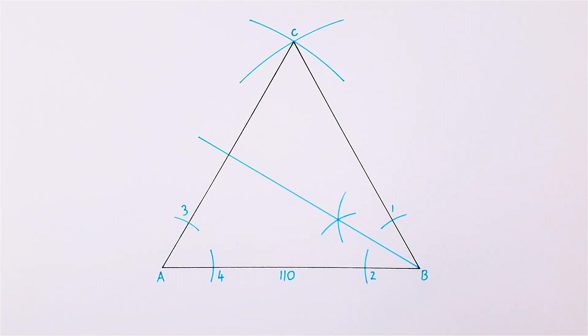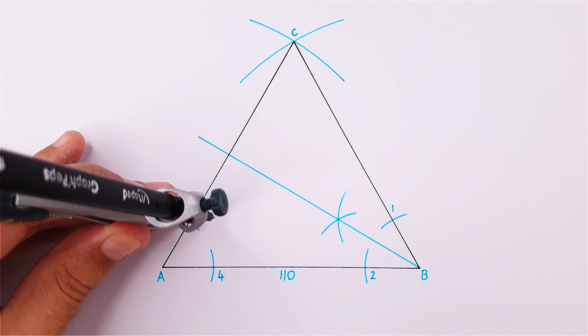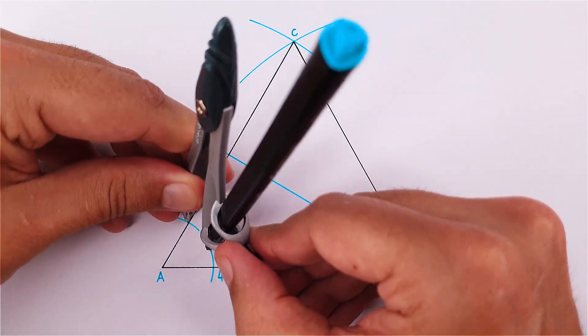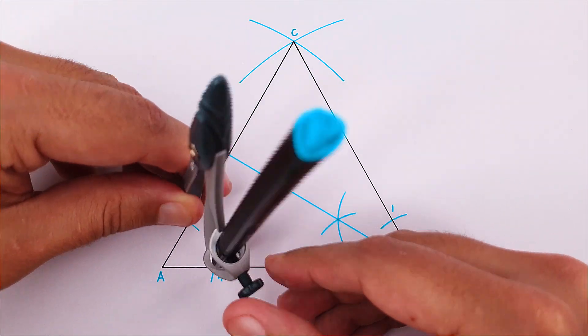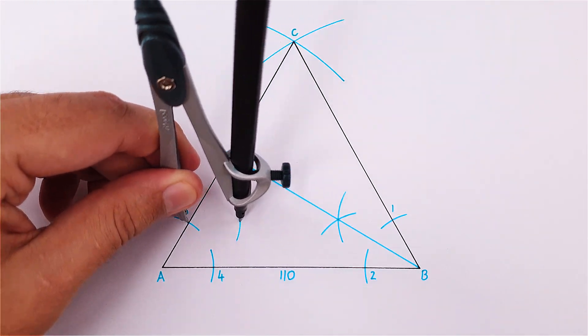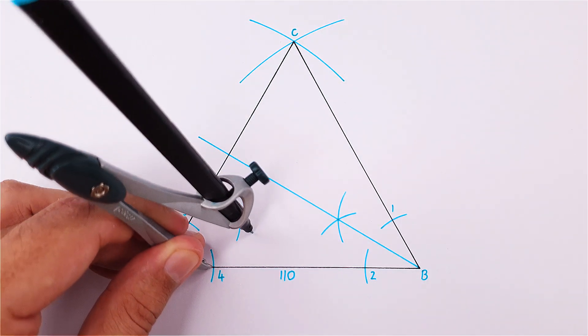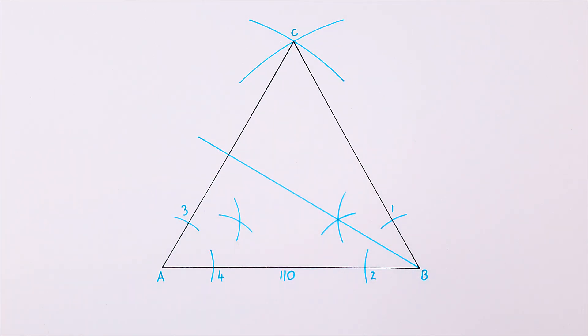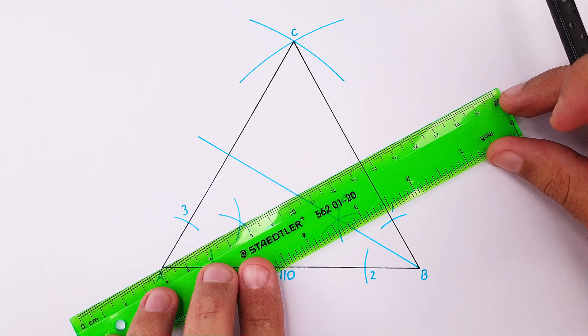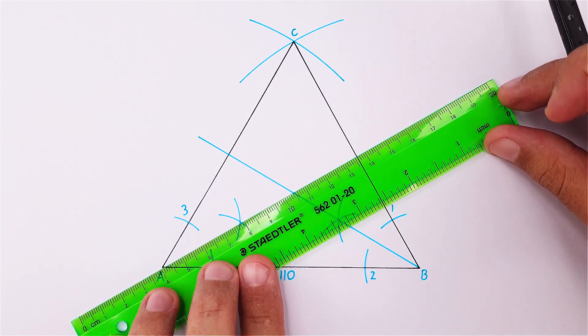Place your compass on point 3, adjust it to point 4 and draw an arc towards the center of the triangle. Using the same measurement, repeat this step on point 4 to intersect the previous arc. Draw a line from A through the intersection. This is your second angle bisector.